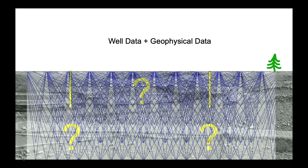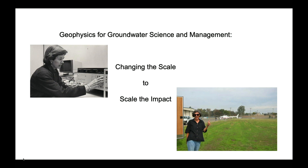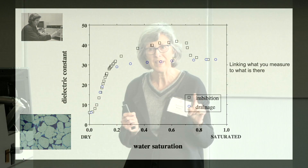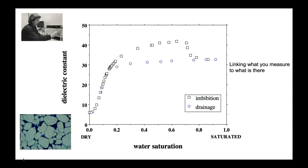That's the introduction to geophysics for groundwater science and management. Now I'm going to talk about changing the scale to scale the impact — how did I go from making electromagnetic measurements in the lab to a double thumbs up when a helicopter took off to make electromagnetic measurements of the groundwater systems of the Central Valley? There is a theme, and it's fun to connect the dots. What has always intrigued and motivated me is thinking about how we can link what we measure to what is there. It started in the lab, curious about how the presence of water in the pore space in a sandstone was impacting the dielectric permittivity I was measuring.